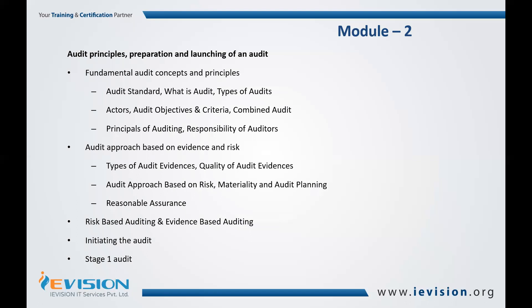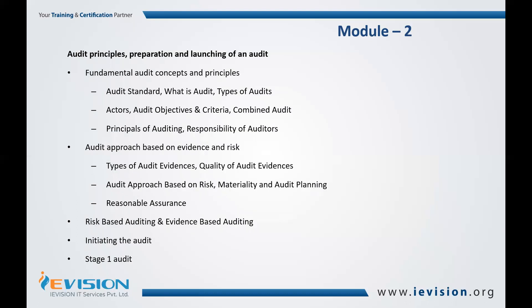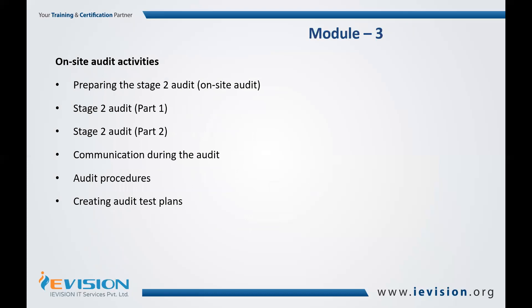Stage one audit is essentially document verification. There is a list of documents required as part of ISMS — covering the clauses, the controls, and what is defined in the scope document as well as the statement of applicability. You and your audit team will review the effectiveness of these documents. Once stage one is completed, you will evaluate the effectiveness of what has been done so far in terms of ISMS documentation.